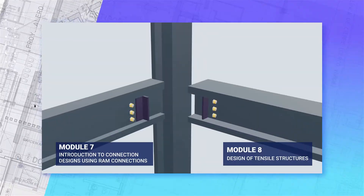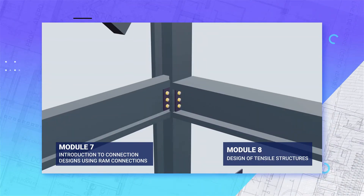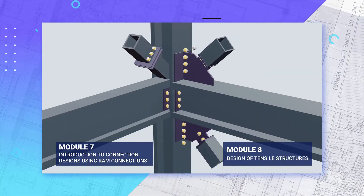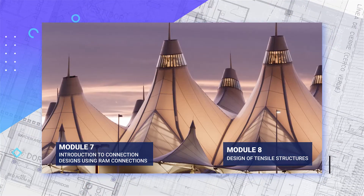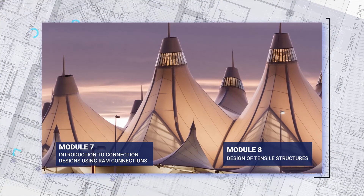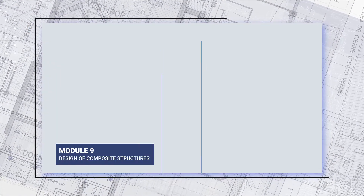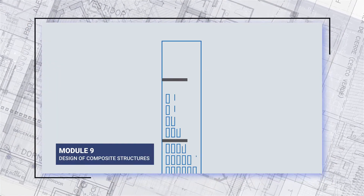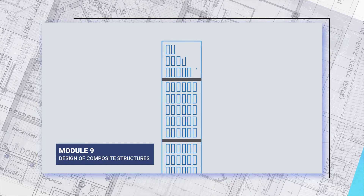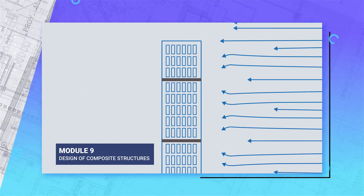From Modules 7 to 9, we cover everything in connection design and design of tensile structures for large public spaces. You will also learn to design a 200-metre tall building to withstand wind forces.